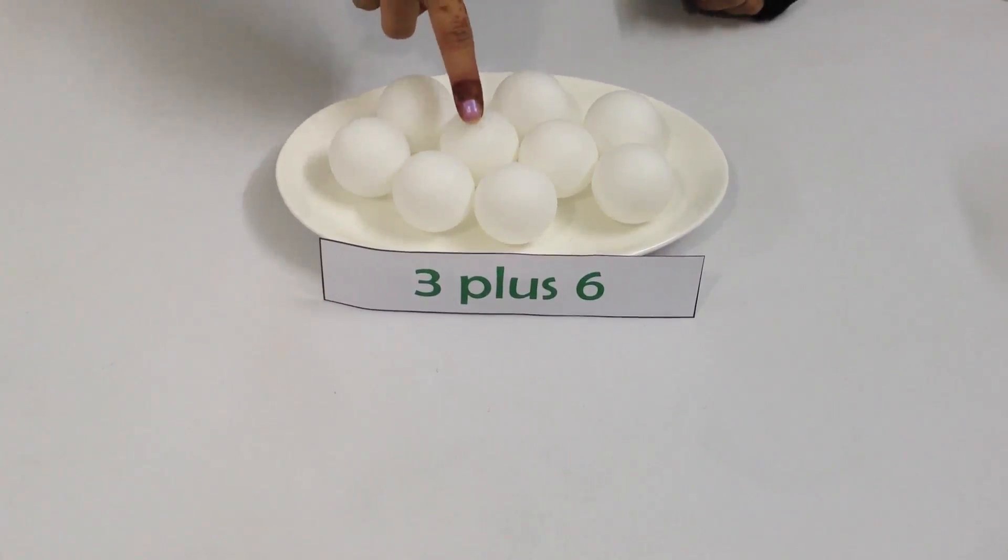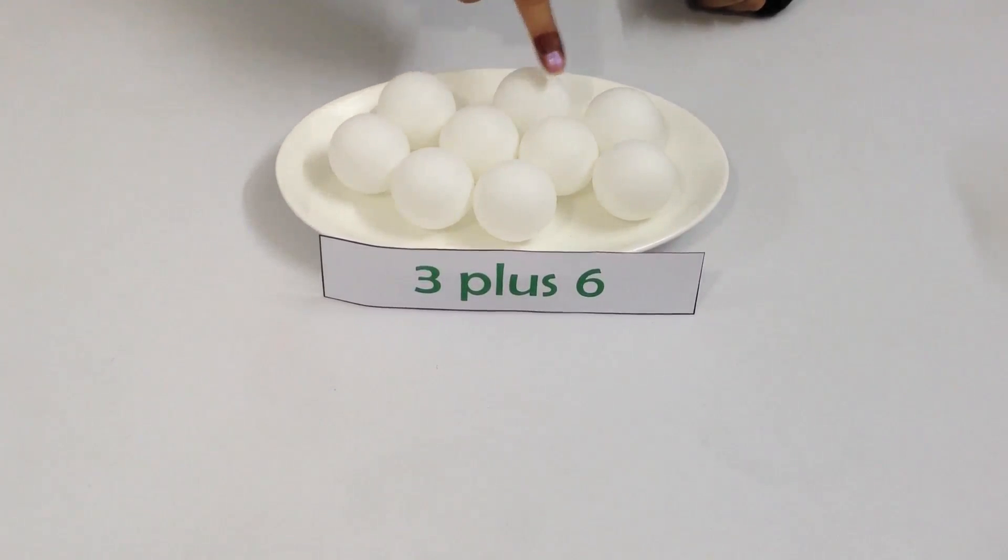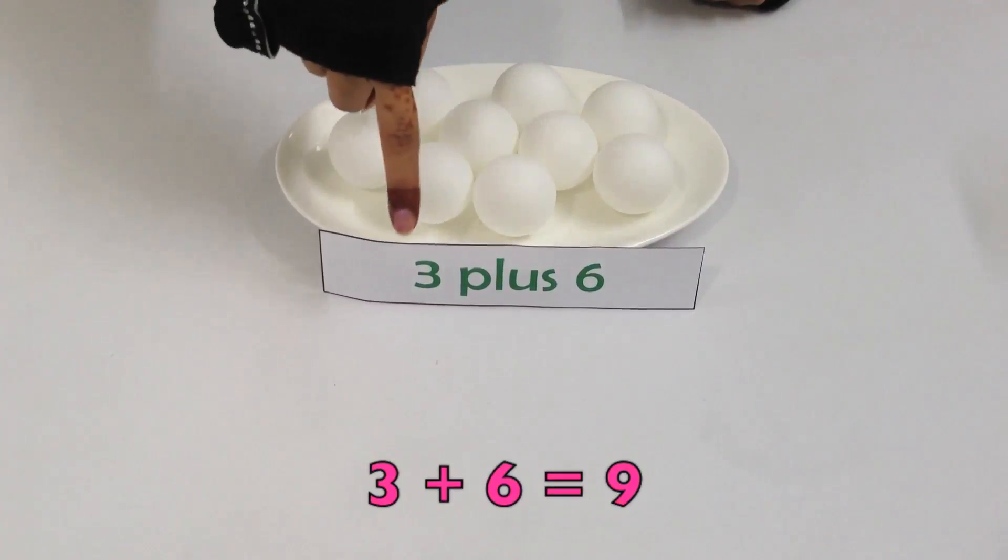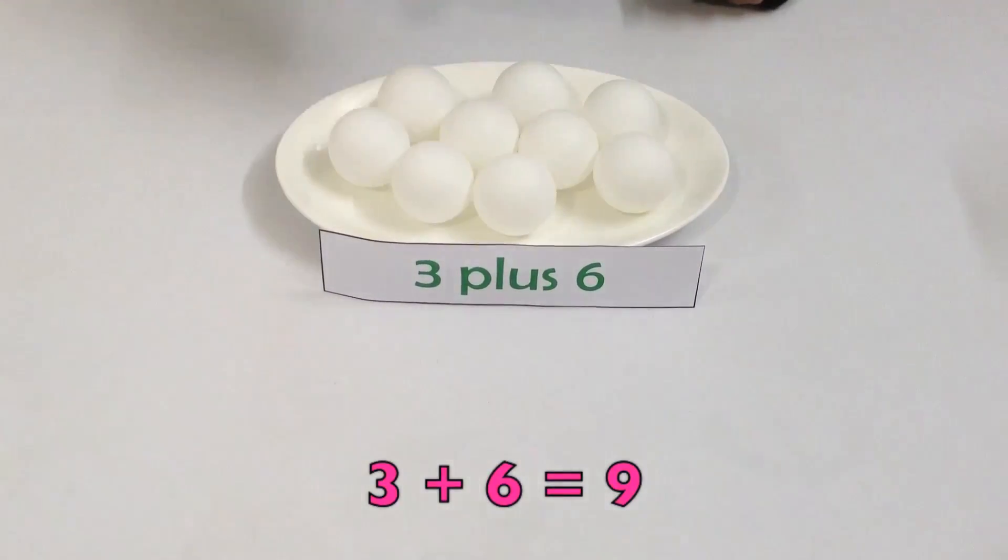We are now going to count all of them together: one, two, three, four, five, six, seven, eight, nine. Three plus six equals nine.